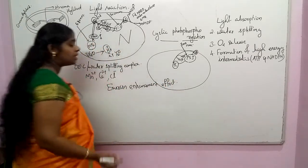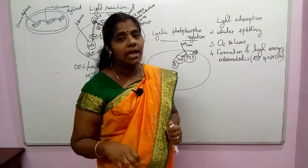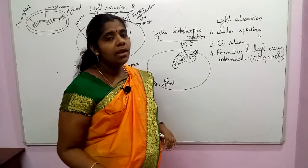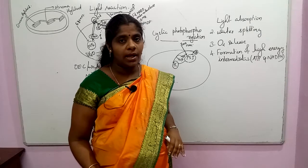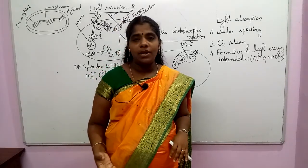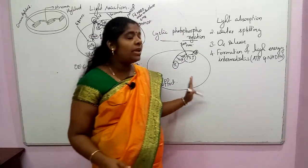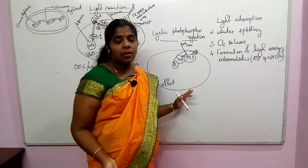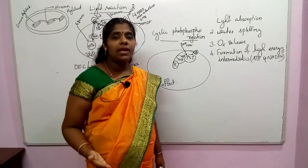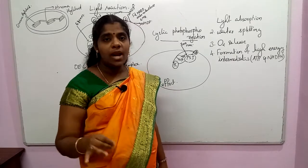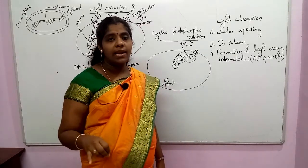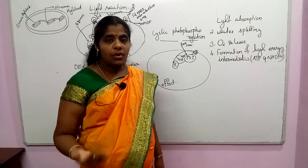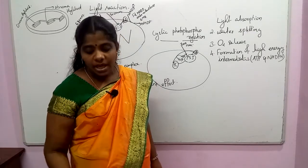Let us go through cyclic and non-cyclic photophosphorylation. When Chlorella was exposed to both 680 and 700 nanometer wavelengths of light together, it showed maximum photosynthesis. The effect of these two wavelengths together he called the Emerson Enhancement Effect, because it involves both Photosystem 1 and Photosystem 2 working together to enhance the photosynthetic rate.